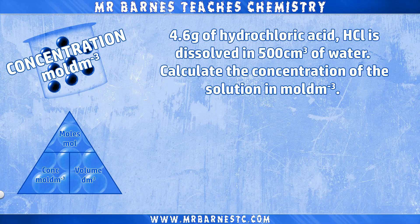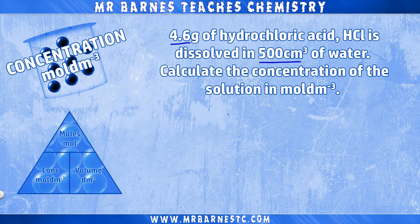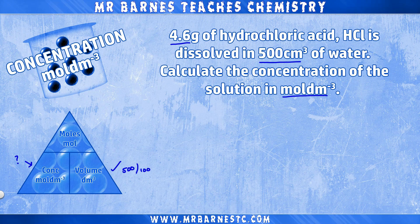Last question on calculating concentration in moles per decimetre cubed — let's step the difficulty up again. 4.6 grams of hydrochloric acid HCl is dissolved in 500 centimetres cubed of water. Calculate the concentration in moles per decimetre cubed. We can easily work out the volume: 500 centimetres cubed divided by 1000 gives 0.5 decimetres cubed.